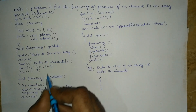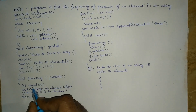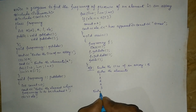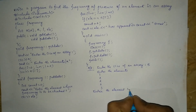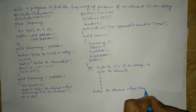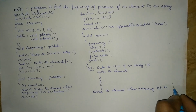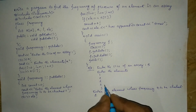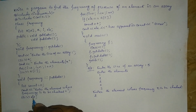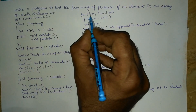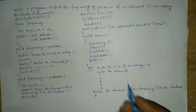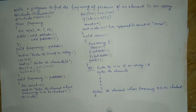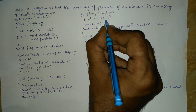Now put data is called, so control jumps to the put data function. Here int count is equal to 0 and cout asks: enter the element whose frequency is to be checked. It displays that prompt and I am going to enter 2 to check how many times 2 has appeared. So 2 is stored in variable ele. The for loop begins: i equals 0, i is less than n, which is 5, so the condition is true. We check if element equals a of 0.